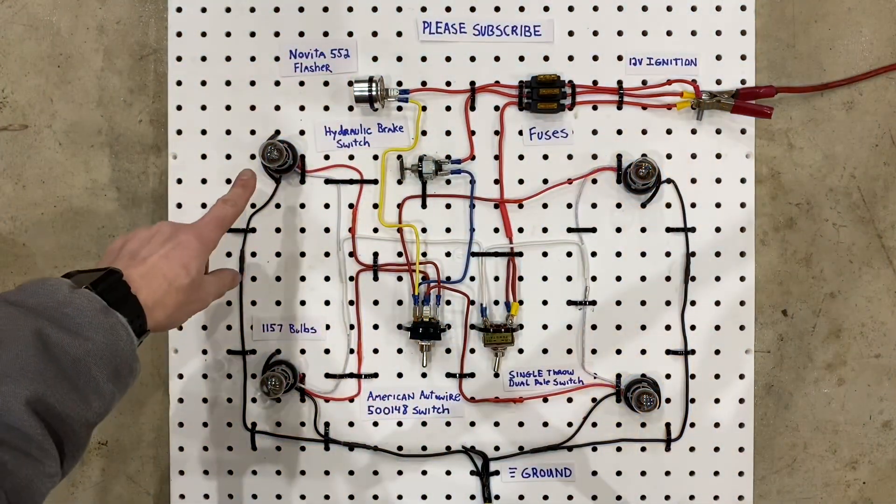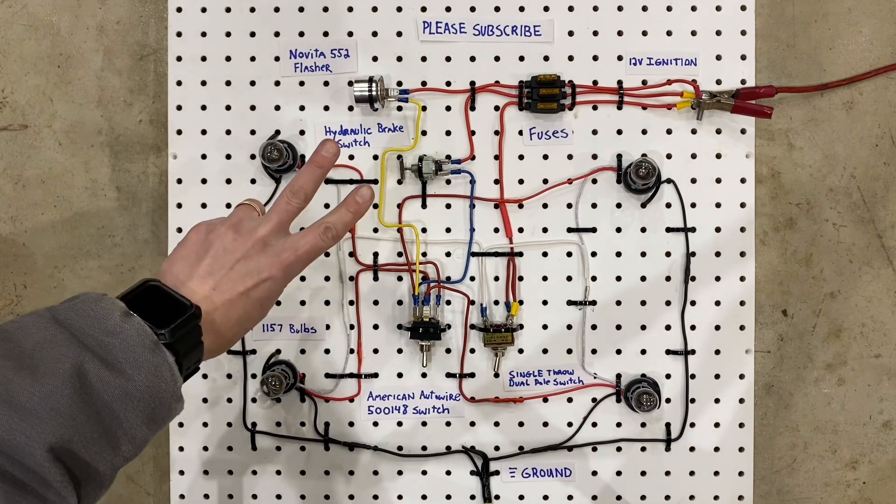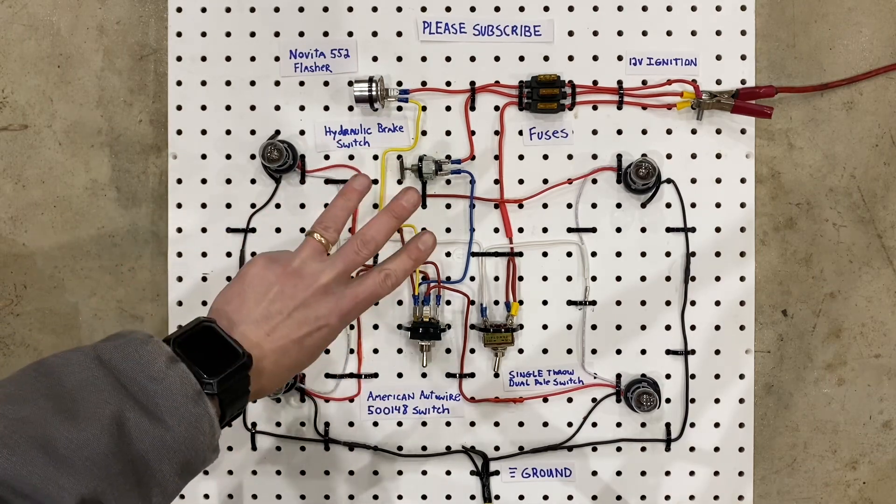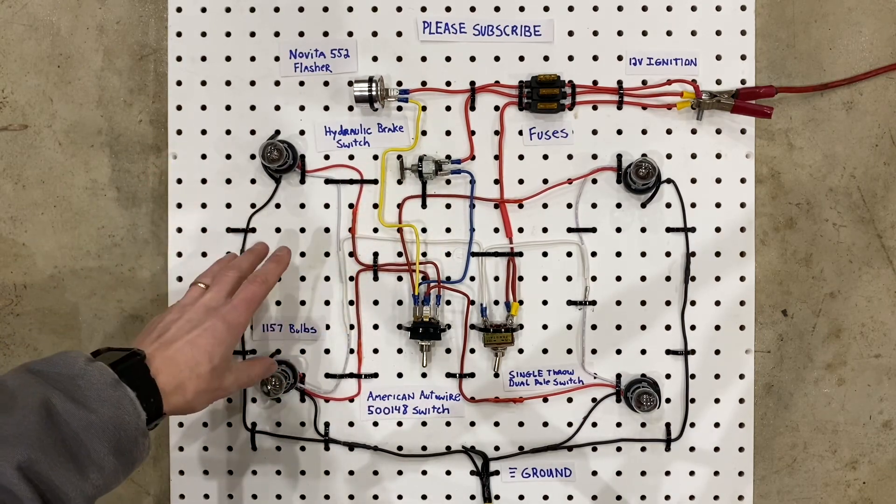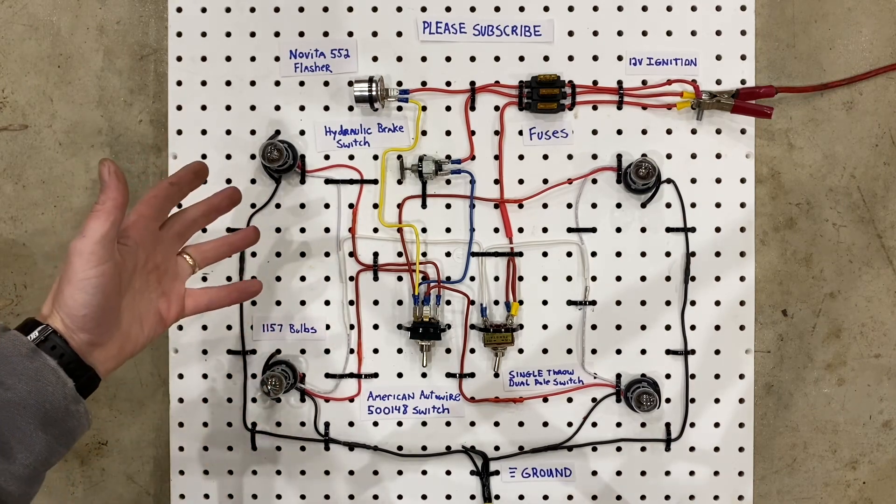The first thing is the bulbs. These are 1157 bulbs, which are dual filament bulbs. Now this is a really cool circuit because we're doing three functions with two filament bulbs. These are super common, they're super cheap, and you can replace them with LEDs and it's totally fine.